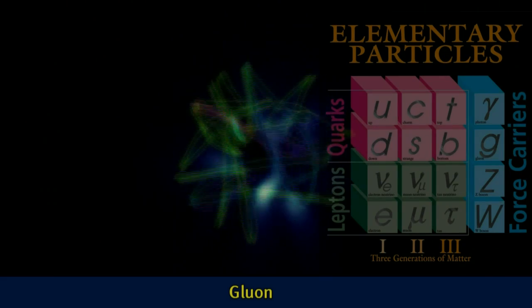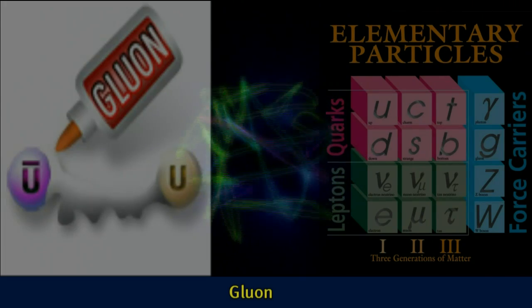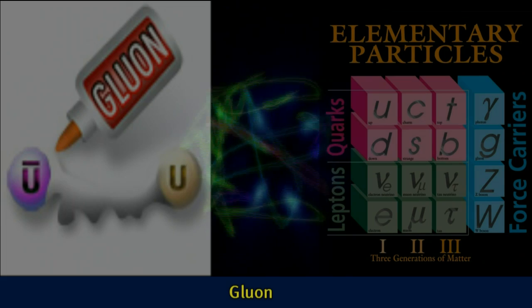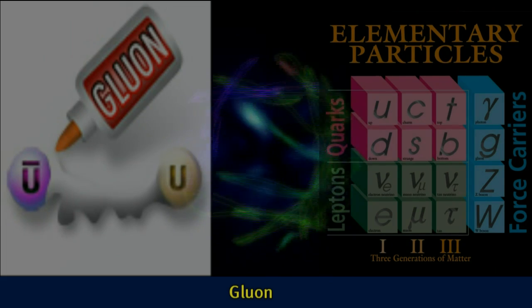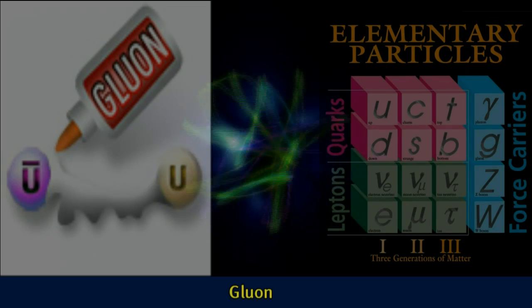But undaunted, we press on. We know that when gluons cause two quarks to interact, the quarks swap color. And since color is conserved, the gluon must have at least two colors of its own.